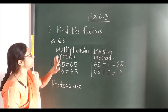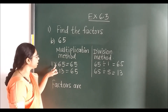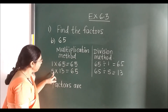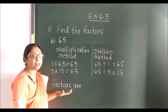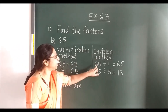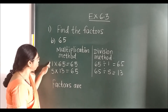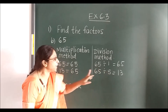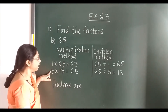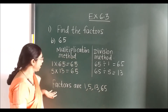Now in the second sum, again we use two methods: multiplication method and division method. For 65, using multiplication method: 1 into 65 is 65; 5 into 13 is 65. 13 into 5 is also 65 but we will not write that in reverse. In the division method, place 1 and 5 with equal sign, then 65 and 13. The factors of 65 are: 1, 5, 13, and 65.